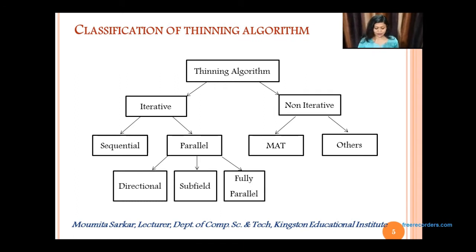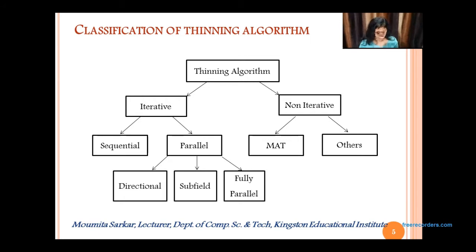These are the classifications of thinning algorithms. We have iterative and non-iterative. In iterative, we have sequential and parallel. Sequential means the number of pixels to be deleted in any iteration depends on all the previous iterations. Parallel means the pixels to be deleted in any iteration depend only on the last iteration, that is the n-1th iteration. In parallel, we have directional, subfield, and fully parallel.